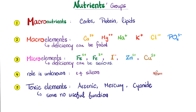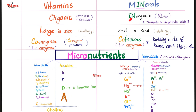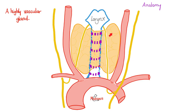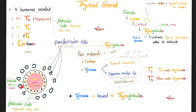Iodine is a mineral — i.e., inorganic. It is relatively small in size. Function-wise, it's important for your thyroid gland. Here's that lovely thyroid gland in your neck. It's a highly vascular gland — too many blood vessels — which is why thyroid surgery carries the risk of bleeding. The thyroid gland has follicles. Each follicle is lined by follicular cells, also known as thyrocytes. Since they are the main cells, we call them A cells.